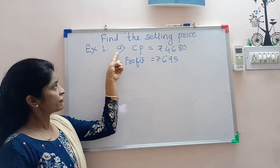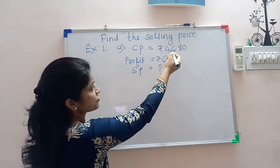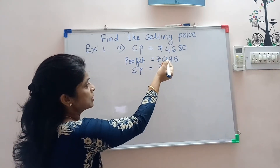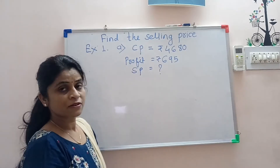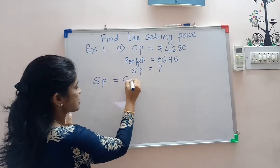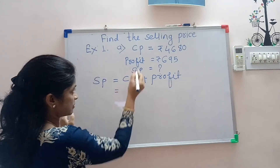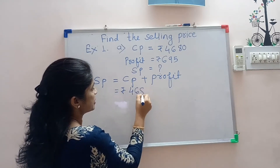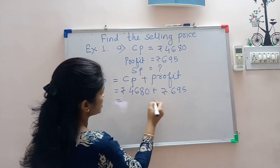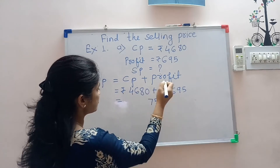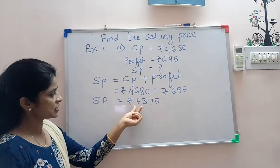Exercise 1, question number 1A — find out the selling price. Cost price is given rupees 4680 and profit is given rupees 695. Since cost price with profit is given, we use the formula: selling price equals cost price plus profit. Adding rupees 4680 plus rupees 695, we carry 1, 6 plus 6 is 12 plus 1 is 13, carry 1, carry 5 — selling price is equal to rupees 5375.